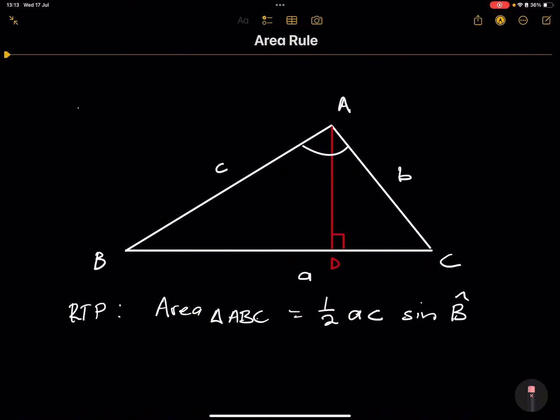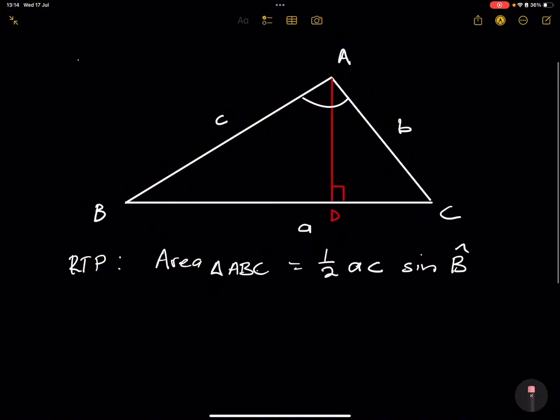So we've got sides A, B and C. Now the first thing that we're going to do, we're going to work in triangle ABC. How do we get the area of a triangle?